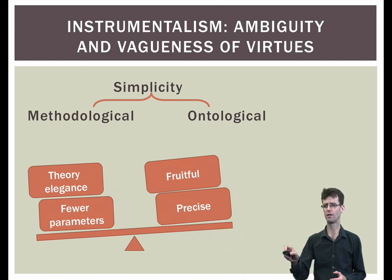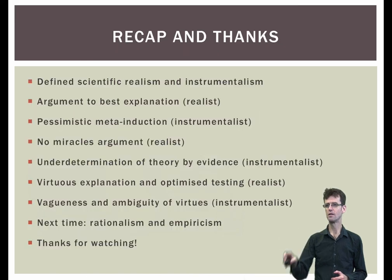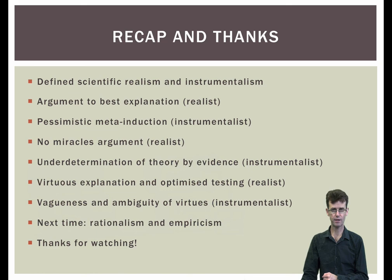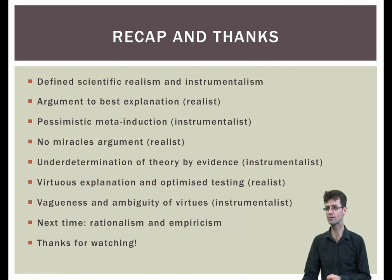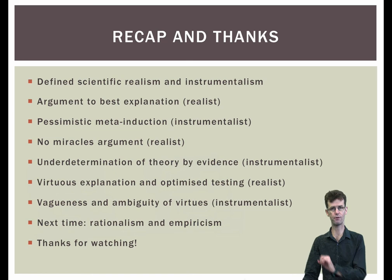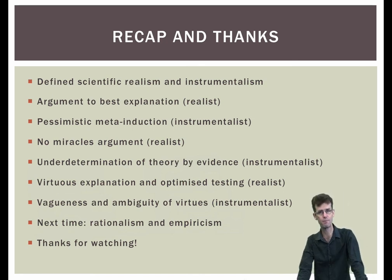To finish off, a recap. First, I talked about scientific realism and instrumentalism and gave definitions of each. Then I talked about a first argument for realism — the inference to the best explanation — and then the pessimistic meta-induction as a first argument for instrumentalism. Then we talked about a realist response in the form of the no miracles argument, and then another instrumentalist argument based on the underdetermination of theory by evidence, followed by a realist response in terms of virtuous explanation and optimised testing. Finally, we talked about an instrumentalist criticism of that realist argument, citing vagueness or ambiguity in some of these virtues and criteria for optimised testing. Next time we'll be talking about rationalism and empiricism. Thanks for watching.